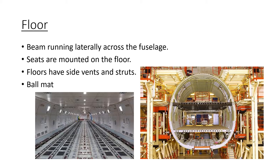The floor behaves as a beam running laterally across the fuselage, attached to frames at each end, with struts for additional support. In most pressurized fuselages, both above and below the floor are pressurized, so no load acts on the floor. If one section depressurizes, sidewall vents open quickly to equalize pressure. The floor also has seat rails to which seats, galleyways, and toilets are attached.